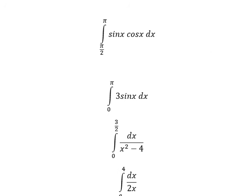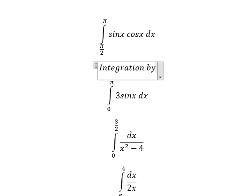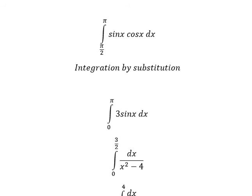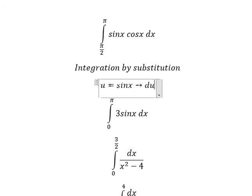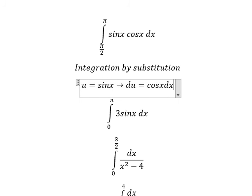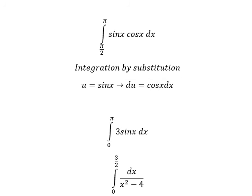We can use integration by substitution. I will put u equal to sine x. Then we get cosine x dx after we do the first derivative of sine x. Next, I need to change the bounds.